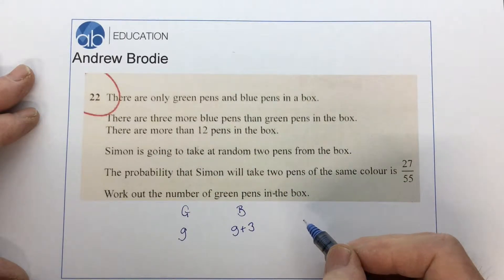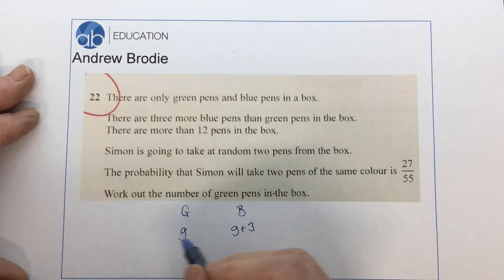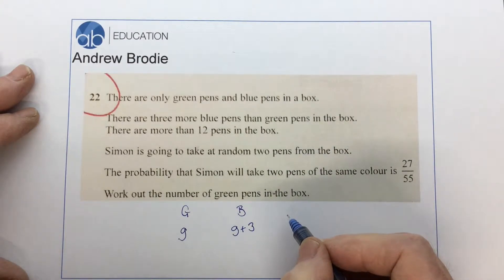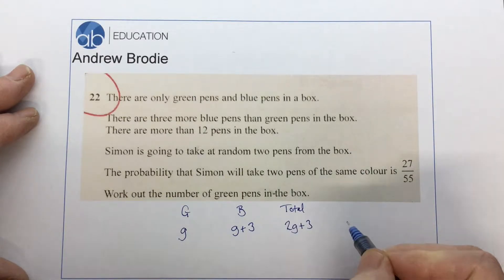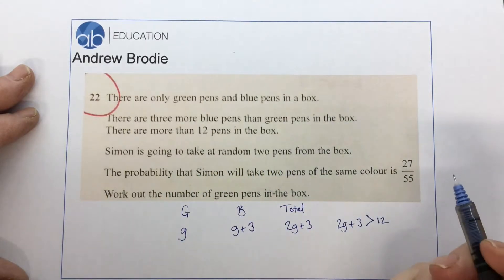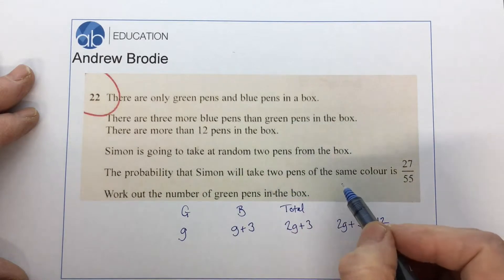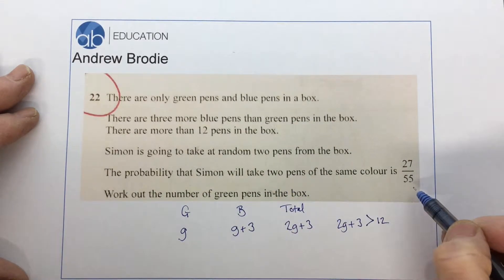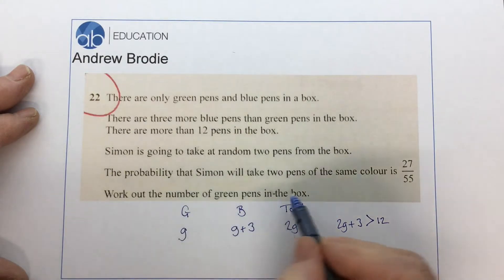It also says there are more than 12 pens in the box. We can see the total must be 2g plus 3, and we've just been told that 2g plus 3 is more than 12. Simon is going to take at random two pens from the box. The probability that Simon will take two pens of the same colour is 27 over 55, and we've got to work out the number of green pens in the box.